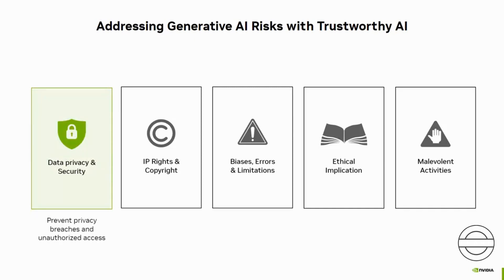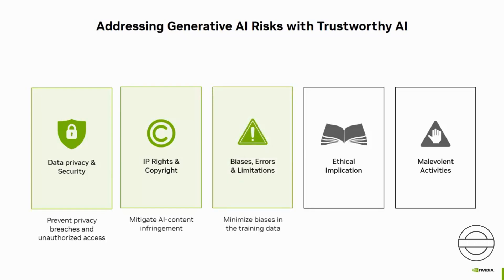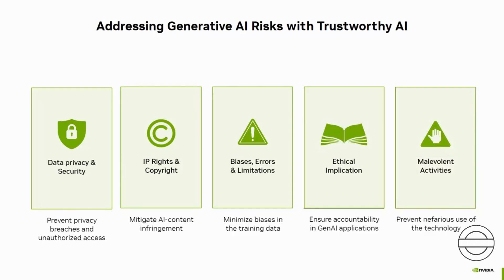Data privacy and security: Generative AI use cases in the healthcare and financial sectors should be monitored very closely to forestall any money-related or sensitive data leakages. IP rights and copyright: Generative AI platforms should mitigate copyright infringement of the creator's work. Bias, errors, and limitations: Generative AI is just as prone to biases as humans are, because in many ways it is trained on our own biases. Ethical implications: Determining responsibility for the outputs of generative AI can be challenging — if AI systems generate harmful content, it may be unclear who bears responsibility: the developers, the users, or the technology itself. Malevolent activities: There is no state-of-the-art know-how that wrongdoers can't put to their evil uses, and generative AI is not an exception, where fraudulent scams of various kinds can be created.